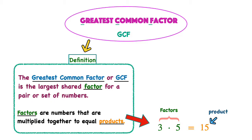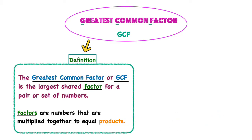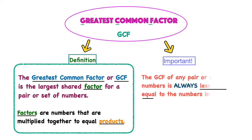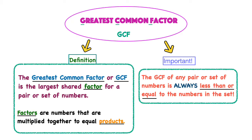In Greatest Common Factor, that's what we're going to be looking for — we're going to be looking for shared factors of numbers. Now before we move on to using the ladder method to find the Greatest Common Factor, there's one more important thing: the Greatest Common Factor of any pair or set of numbers is always less than or equal to the numbers in the set.